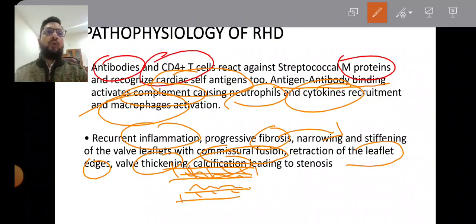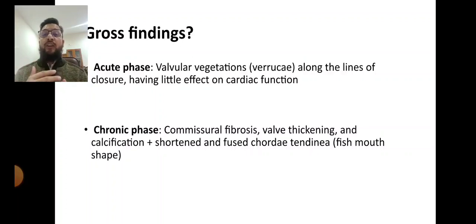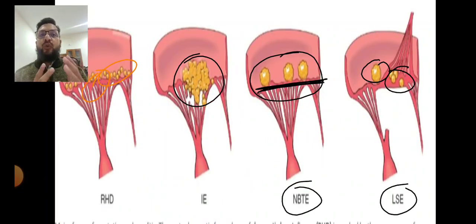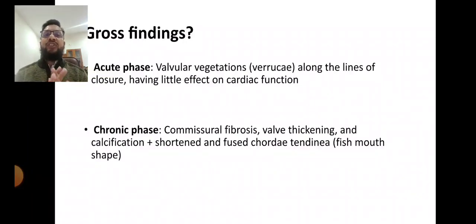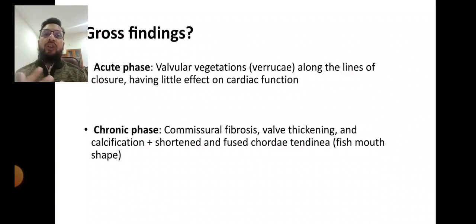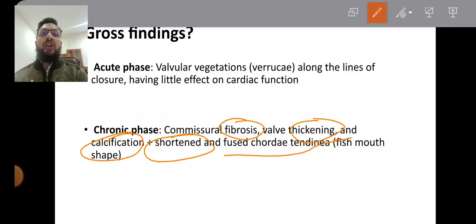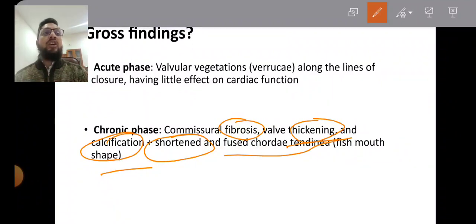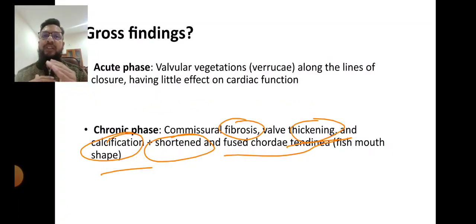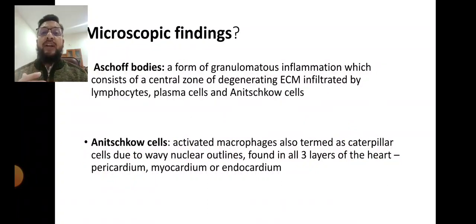Regarding gross findings, in the acute phase you can see vegetations along the line of closure. In the chronic phase there is a cascade: recurrent inflammation, fibrosis, thickening, and calcification, with shortened fused chordae tendineae. The resulting shape is called the fish-mouth shape of the valve. You should know this term even though memorizing it is not critical.